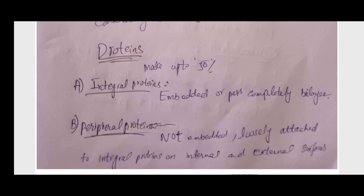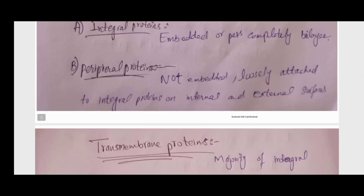The composition of the cell membrane: proteins may be 47 to 50 percent. These proteins are of two types: integral or peripheral. Integral membrane proteins are embedded in or pass completely through the lipid bilayer. Peripheral membrane proteins are present on the outer or inner surface of the membrane and are not embedded within the lipid bilayer.